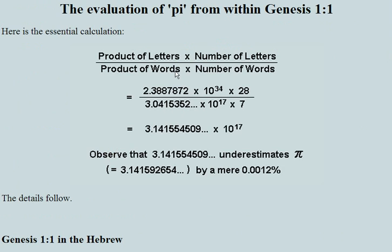Let's have a look. We have the formula here: it is the product of the letters multiplied by the number of letters, divided by the product of the words multiplied by the number of words. Now if you're thinking this is an unusual formula — it is.